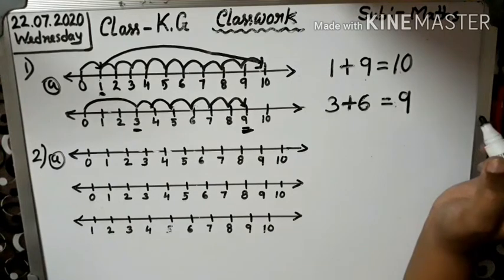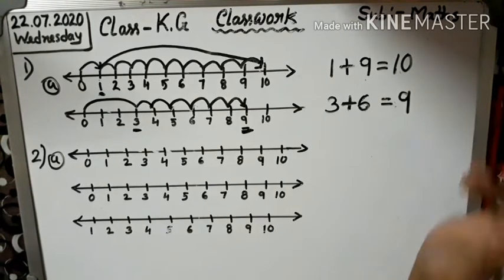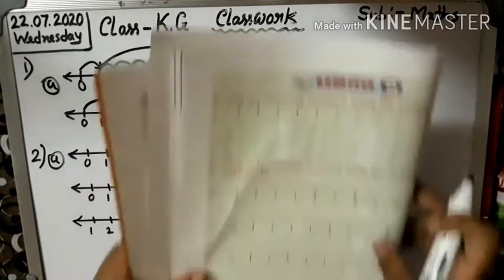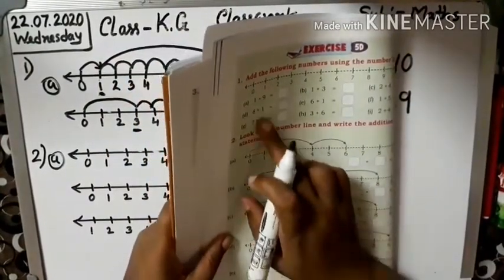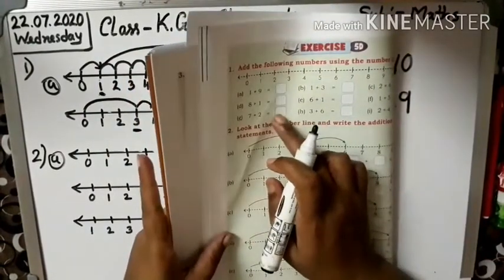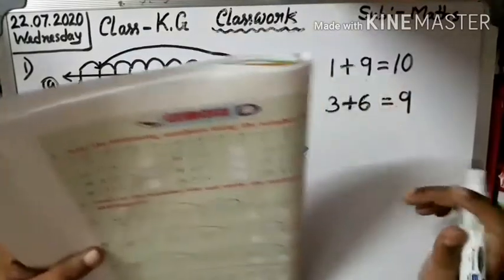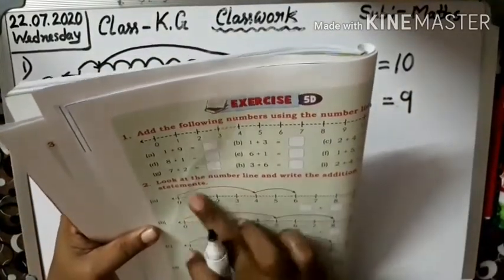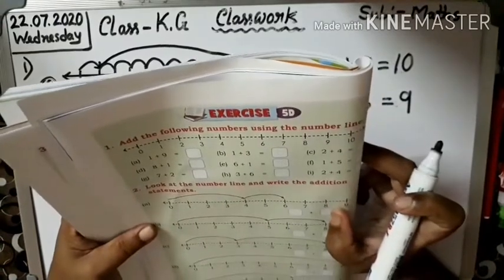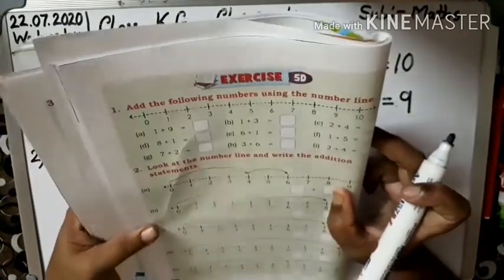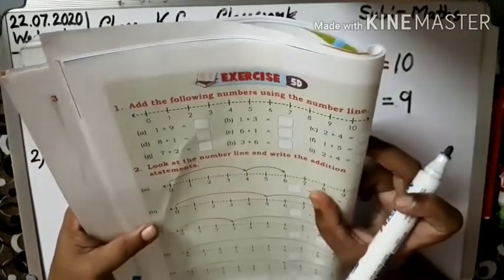I hope that everyone understood, children. Okay. Next, children, do it on your own. Okay. Number 2. Look at the number line and write the addition statements.